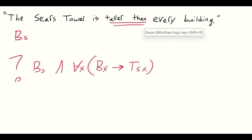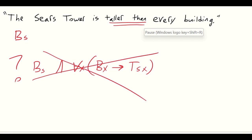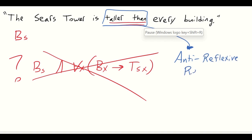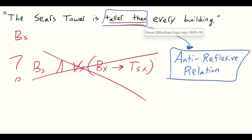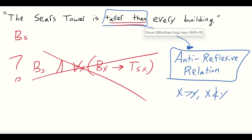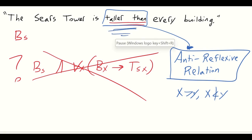That claims that if x is any building whatsoever, then the Sears Tower is taller than any x. But that's false because x can be the Sears Tower itself. So this will not work because it implies that the Sears Tower is taller than the Sears Tower, which is obviously impossible. When we consider this 'taller than' superlative — this relational predicate — this is anti-reflexive as a relation. In other words, if x is taller than y, y cannot be taller than x. Or, if x is greater than y, it obviously cannot be the case that x is less than y. So 'taller than' is inherently an anti-reflexive relation.